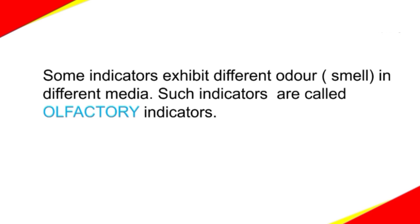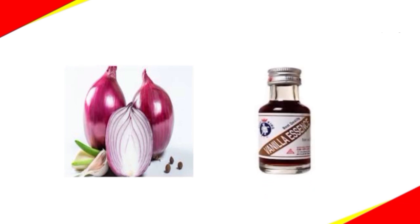Some indicators exhibit different odor in different media — such indicators are called olfactory indicators. The best example known to us is an onion, which has a characteristic pungent smell and changes or loses its odor in an acidic medium. We also have vanilla essence as an olfactory indicator.